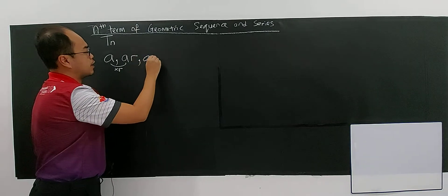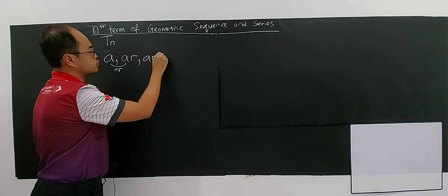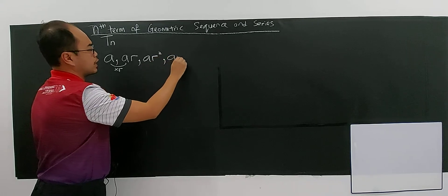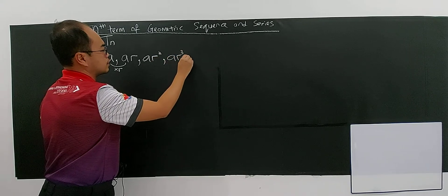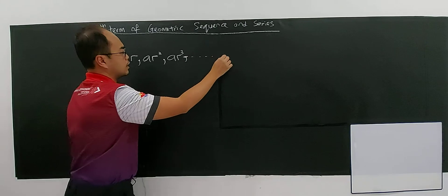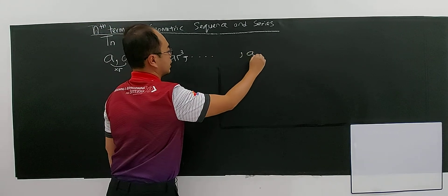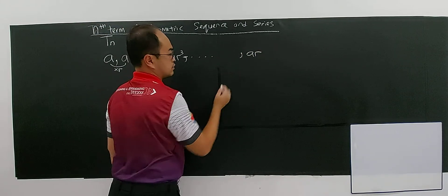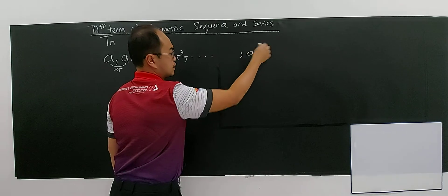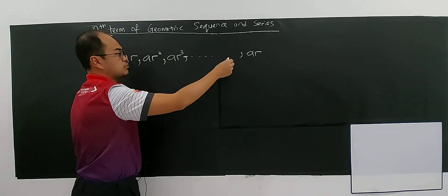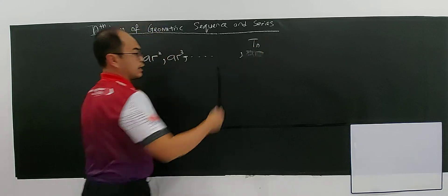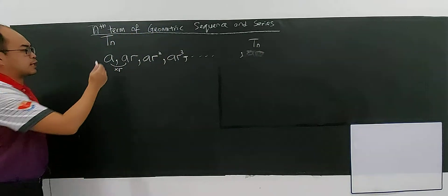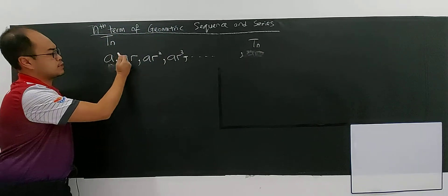So followed by AR to the power of 2, then followed by AR power of 3, and so on and so forth up to AR power of something. We don't know what the term is when we start the n-term, meaning we want to find the n-term. Then we can see the pattern here.